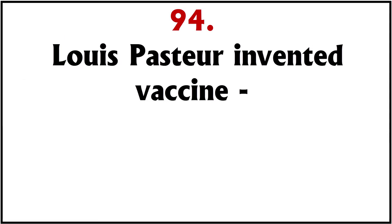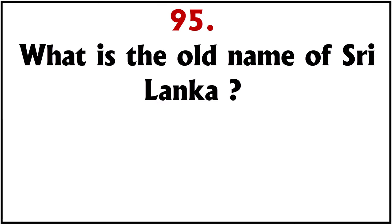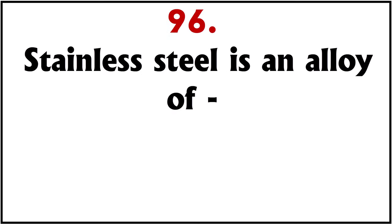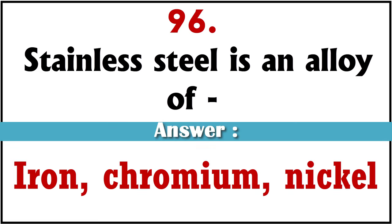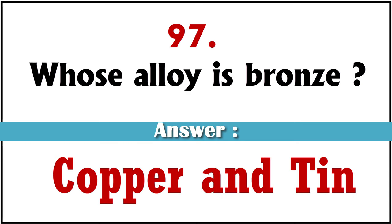Louis Pasteur invented the vaccine for? Rabies. What is the old name of Sri Lanka? Ceylon. Stainless steel is an alloy of? Iron, chromium, and nickel. Bronze is an alloy of? Copper and tin.